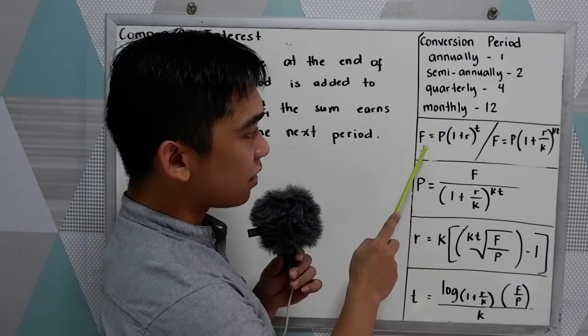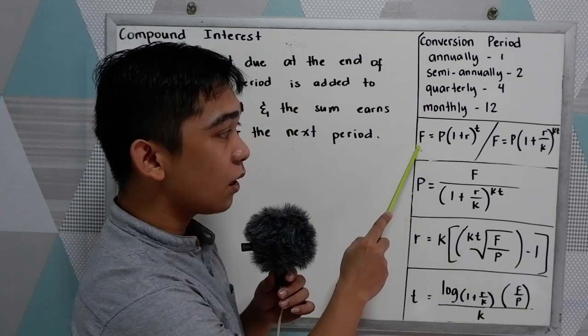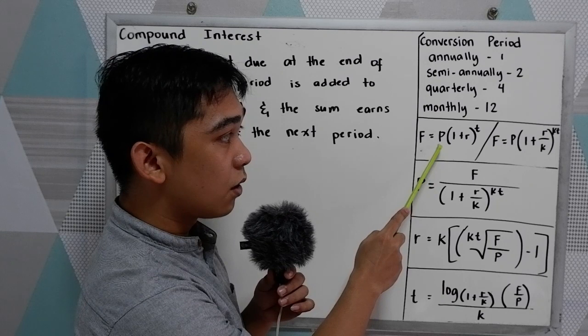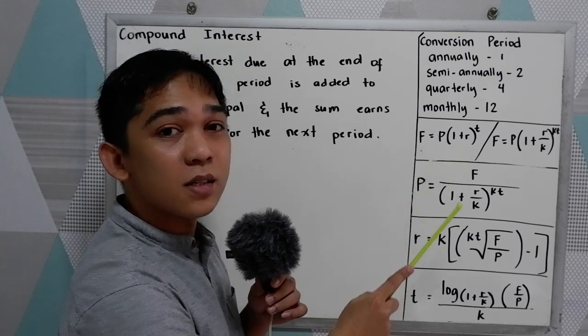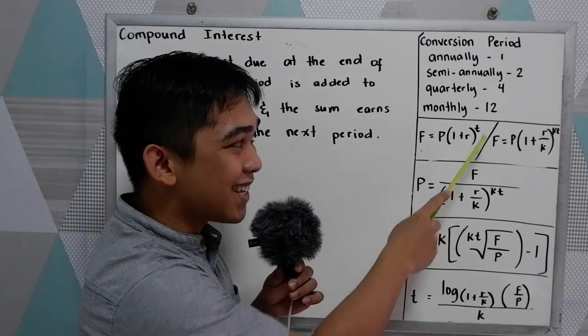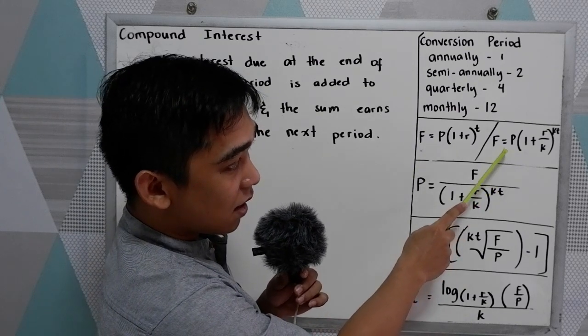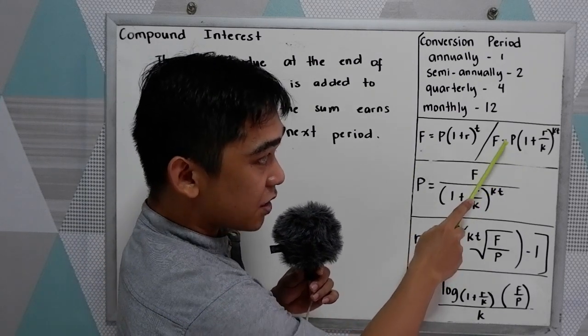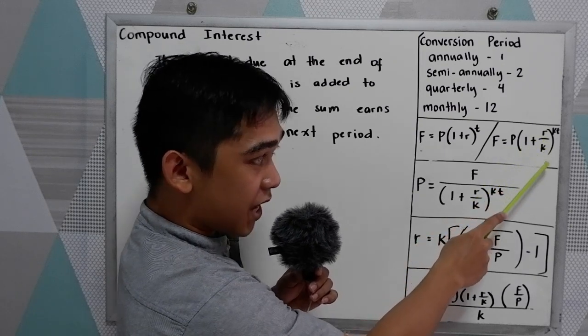For the future value, we have the following formulas. Future value is equal to P, quantity 1 plus R raised to T, wherein P is the principal, R is the rate, and T is the time. And that is the same as the formula here: F is equal to P, principal, quantity 1 plus R over K.